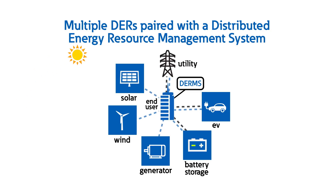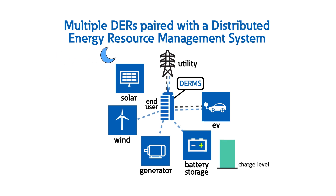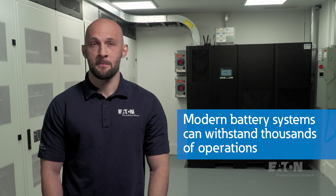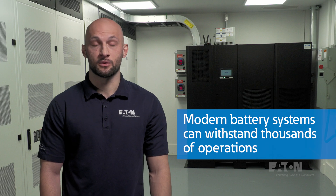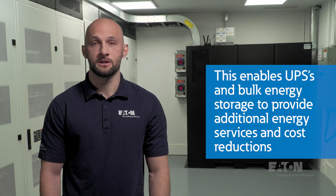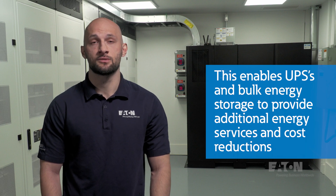Solar generation can be erratic because the sun doesn't always shine. Batteries have a finite capacity and can be limited in charging and discharging rates that may not optimally match the load. Through the combination of multiple resources and intelligent control strategies, a consumer can better utilize each DER to its strength. Power consumers may also use a DER where the utility grid is not available or practical to serve their loads — in this case, the consumer is fully disconnected from the utility. Modern battery systems can now withstand many thousands of operations compared to traditional lead-acid batteries, allowing for demand response. With the addition of controls, this enables traditional UPSs and newer DERs like bulk energy storage to provide additional energy services and cost reductions beyond standard reserve power applications.